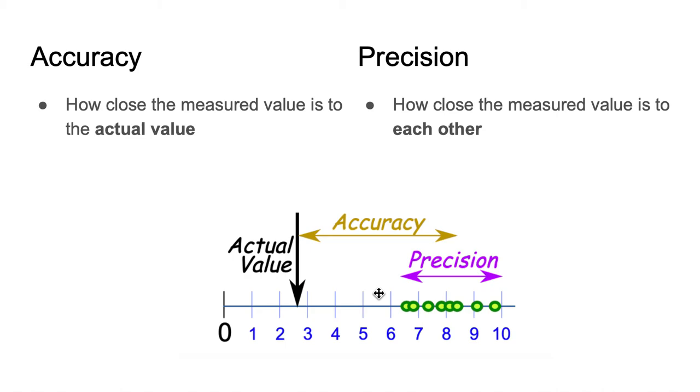But if we constantly get the value of 3 centimeters with the broken ruler, like we get 3.1, 3.01 for like 20 times and such, we can say that our measurements are actually precise, even though the ruler may be wrong.